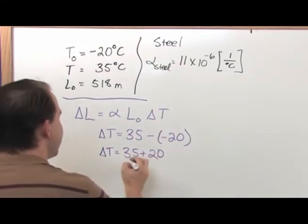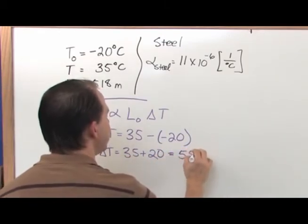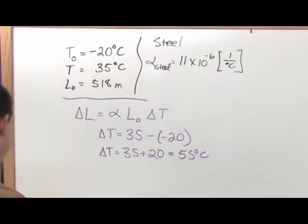And so at the end of the day, your delta T is going to equal 35 plus 20, which is 55 degrees Celsius. Delta T is 55 degrees Celsius.